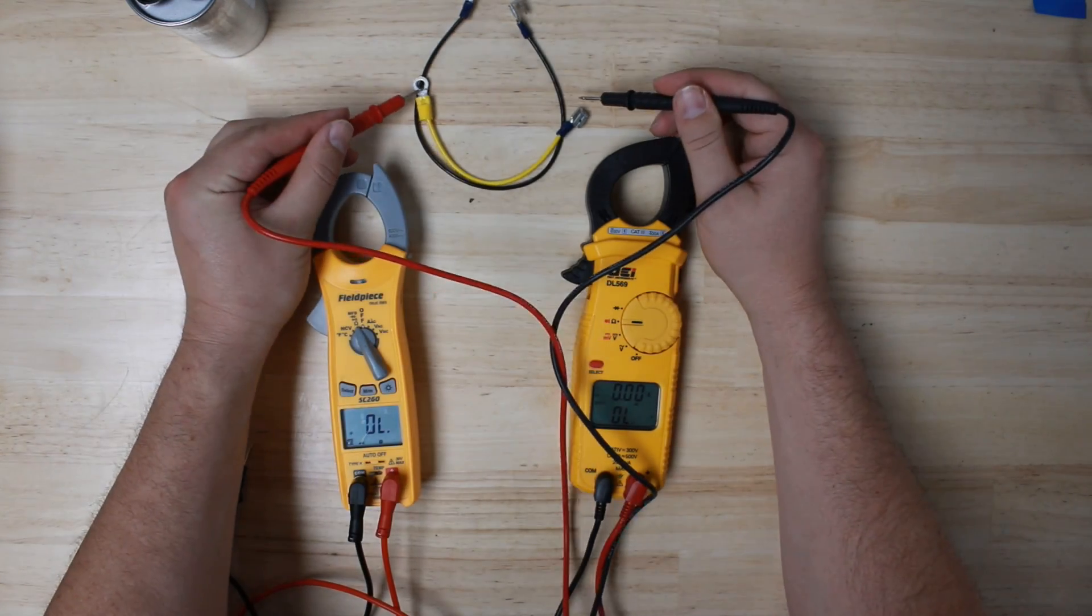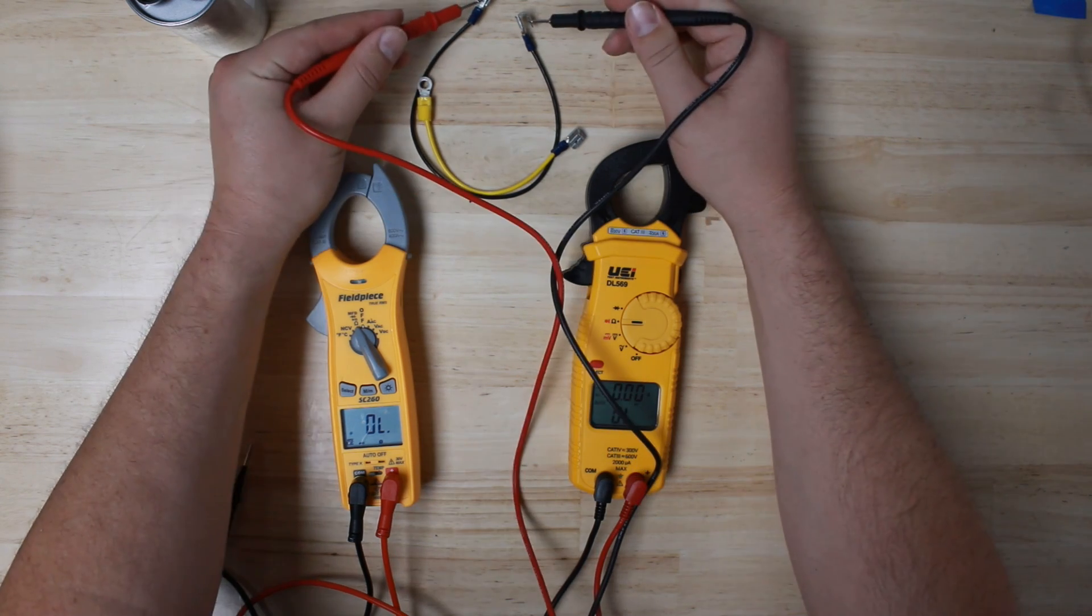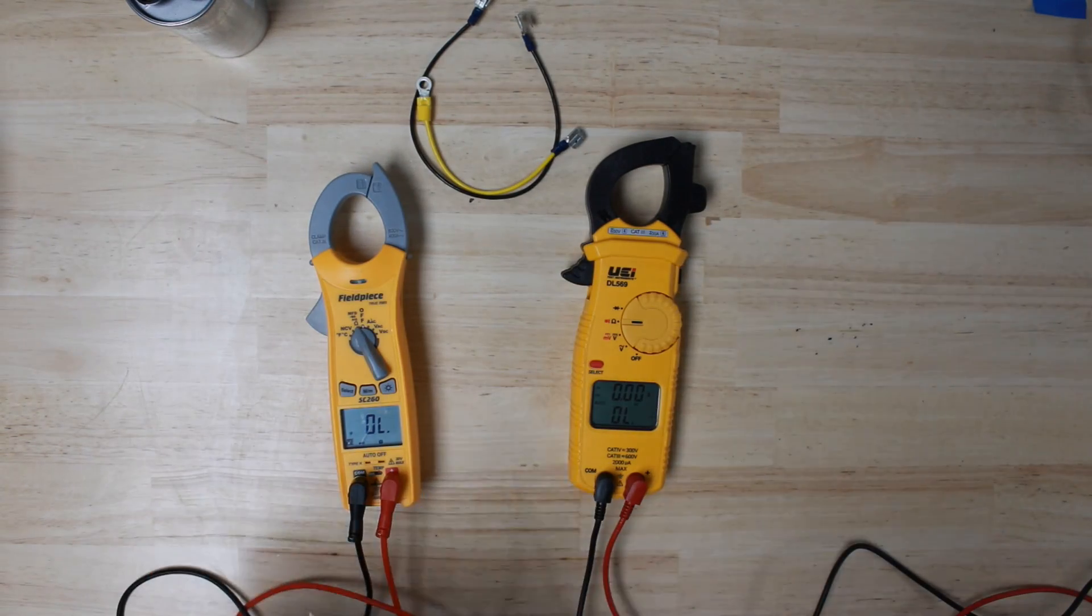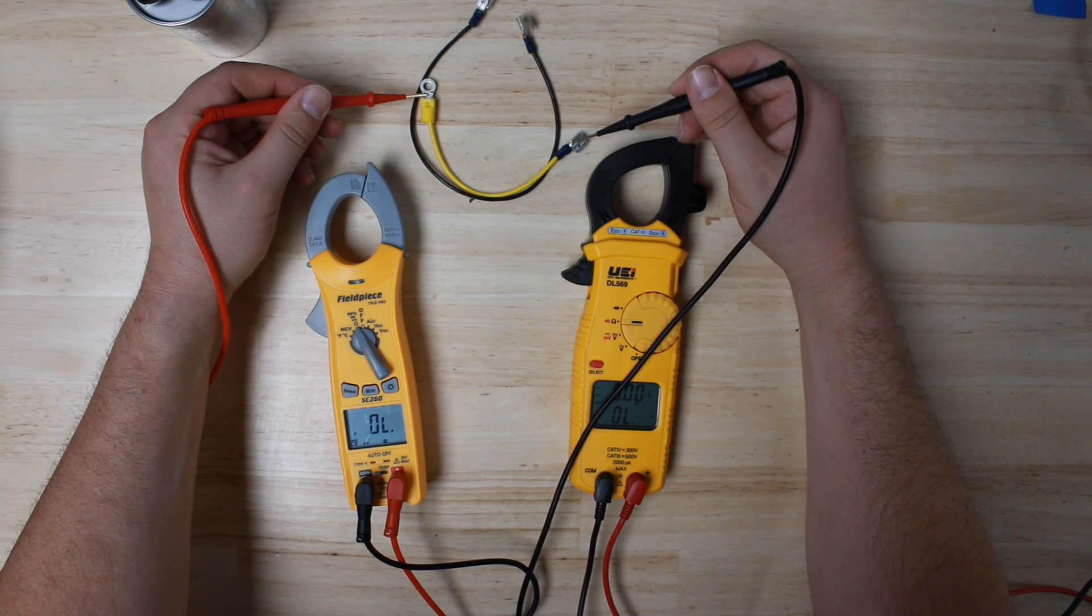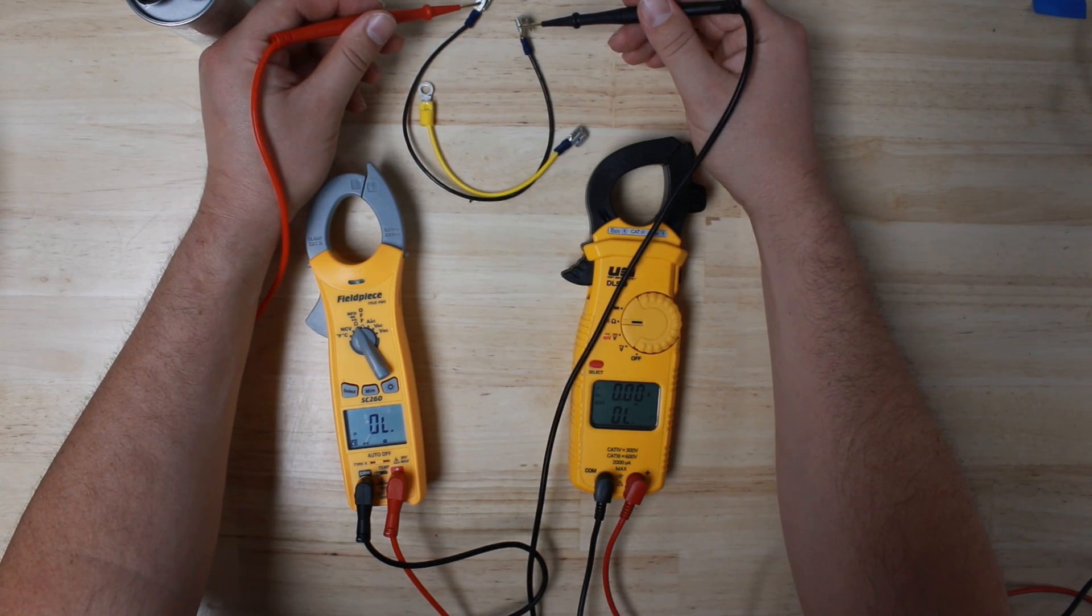So I have a wire here that's no good, and one that's good. The Fieldpiece will do just the same - indicating which wires are good and which are bad.